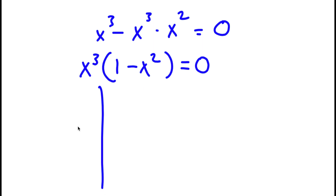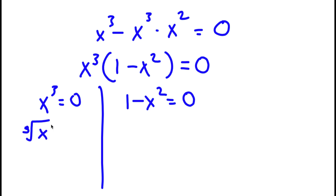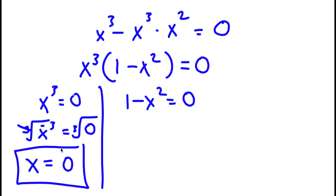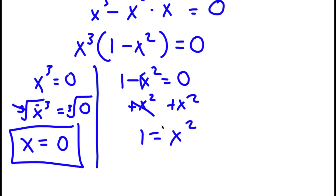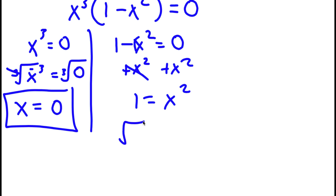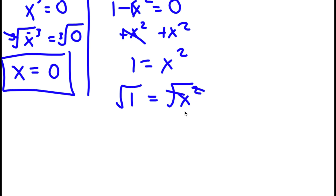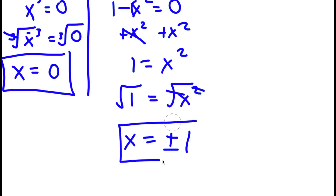This gives me two equations: x³ = 0 and 1 − x² = 0. For x³ = 0, I take the cube root on both sides — the cube root of x³ is x, and the cube root of 0 is 0, so x = 0 is one solution. For 1 − x² = 0, I add x² on both sides; they cancel and I have 1 = x². Taking the square root of both sides gives x = ±1. So these are two more solutions.